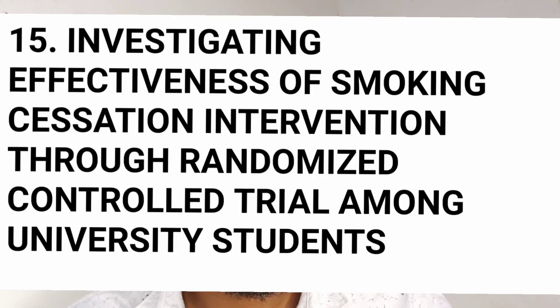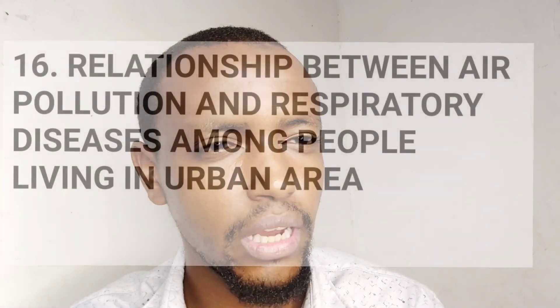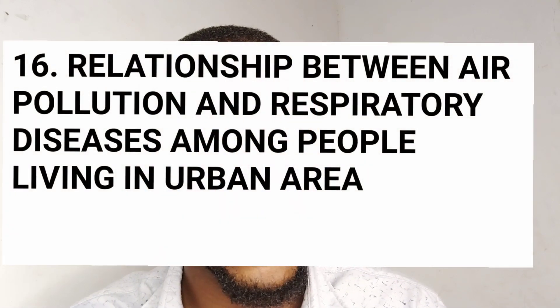Number fifteen: investigating the effectiveness of smoking cessation interventions through a randomised controlled trial among university students. You want to research whether smoking cessation interventions are effective among university students. There are several measures to curb smoking among young adults attending university. Number sixteen: the relationship between air pollution and respiratory diseases. Is there a relationship between air pollution and the development of respiratory diseases like asthma or chronic bronchitis?